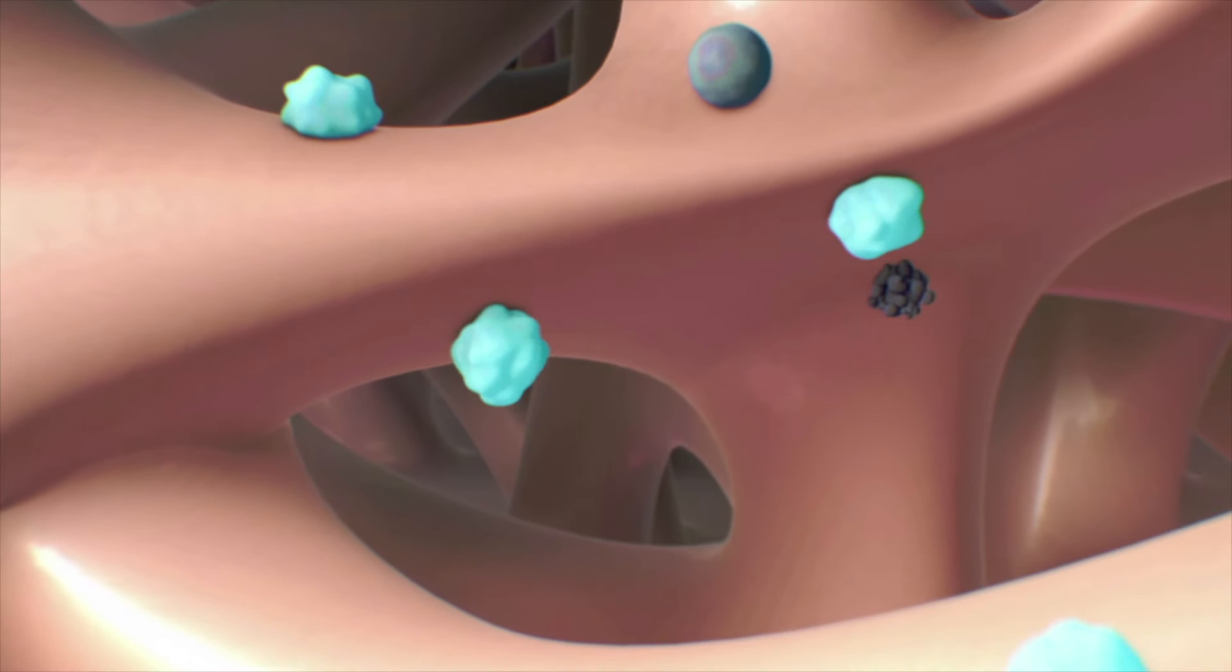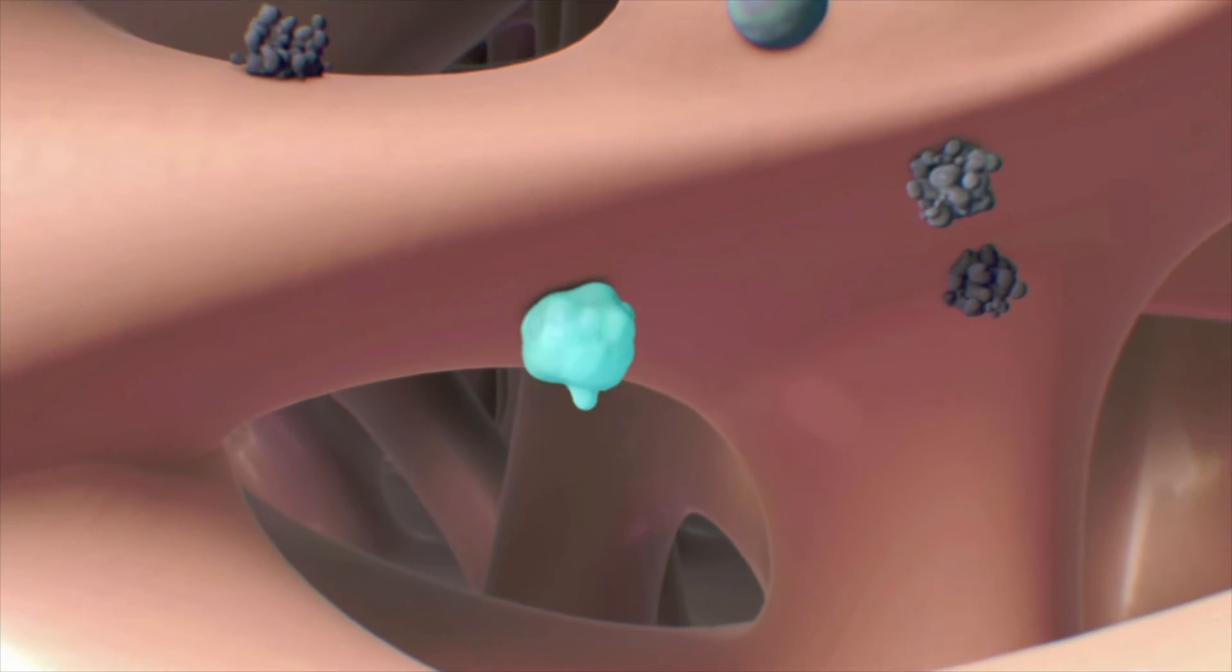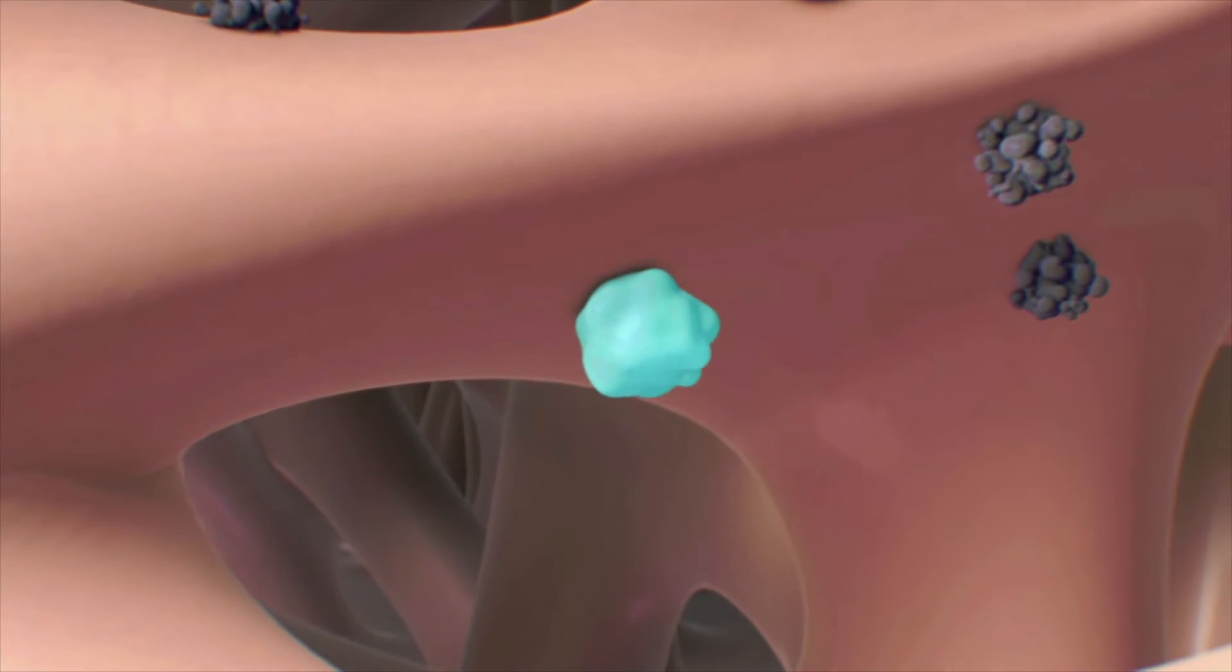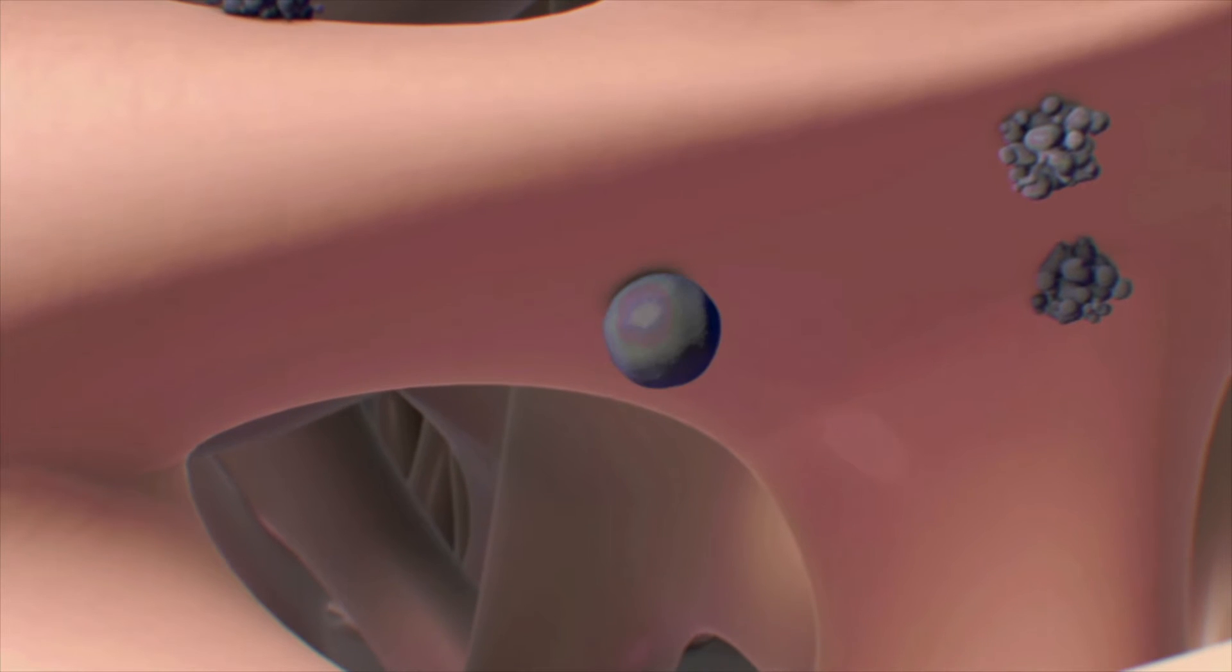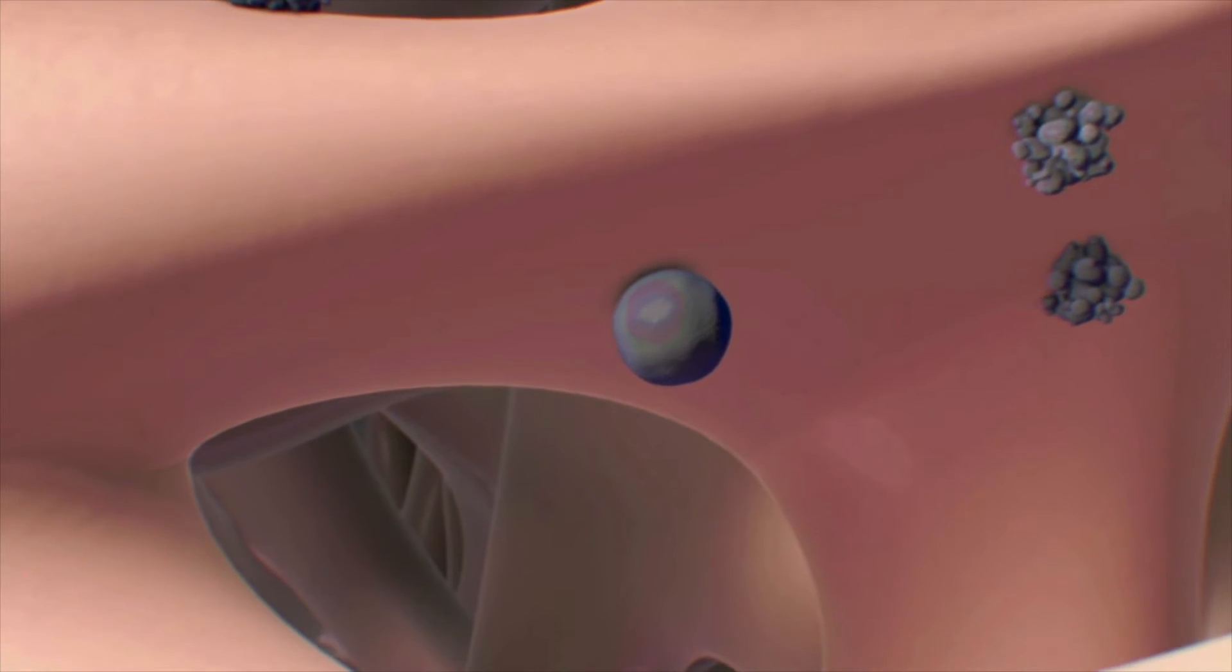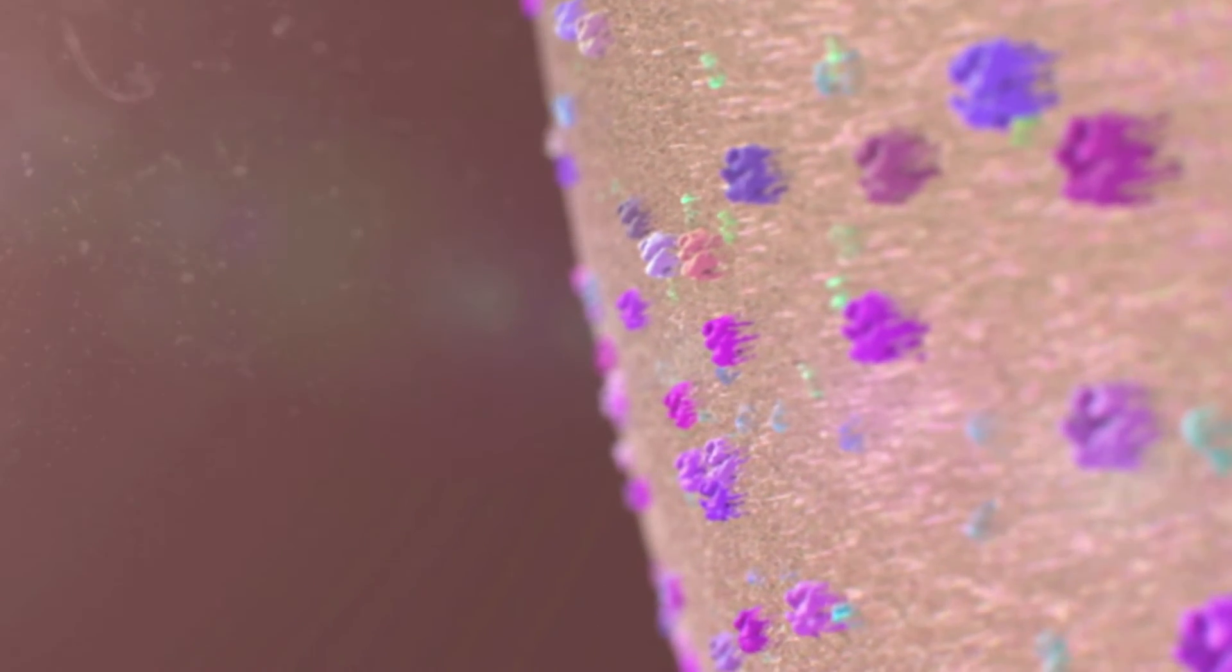Sometimes an activated cytotoxic T cell doesn't die when it should. Instead it becomes dormant. It grows new surface molecules and loses its activation proteins, making it unresponsive to signals from its target pathogen.